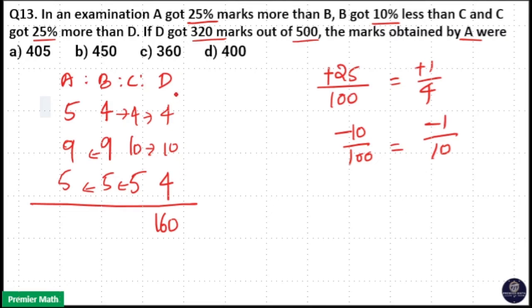Here D is 160 but here sayings D got 320 marks out of 500, that is 160 is 320 in question. D got 320 marks but here our ratio shows 160 parts. So 160 part is equal to 320 means 1 part is equal to 2 units, that is 160 into 2 is equal to 320.